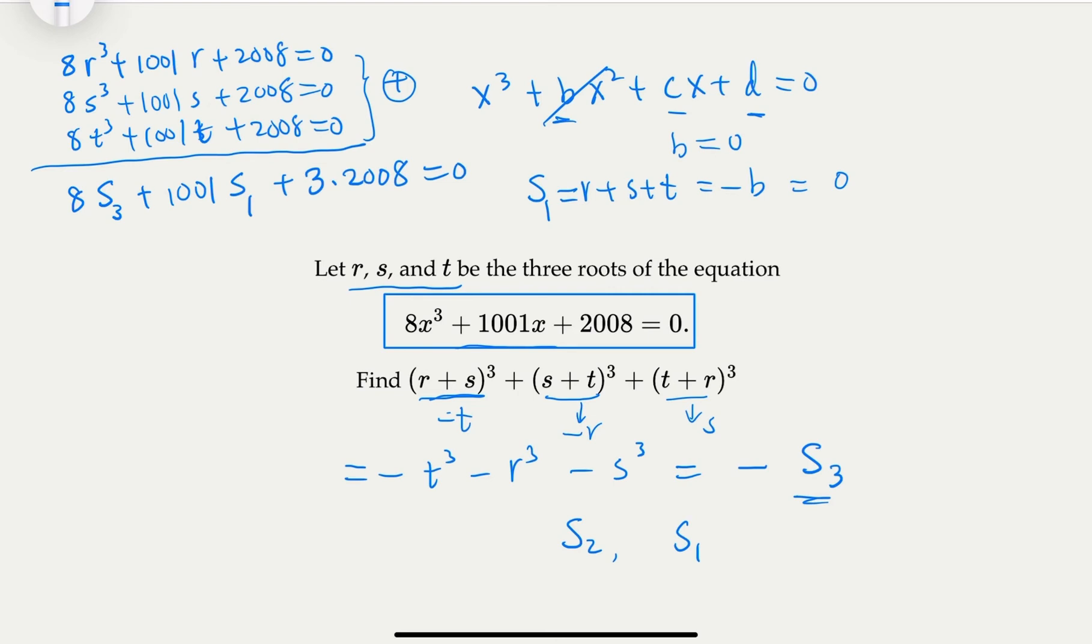Now, here, we notice that S₁ equals zero. That's good news for us, because you can solve S₃ then is equal to negative 3 times 2008 divided by 8. So pretty much you get the answer.